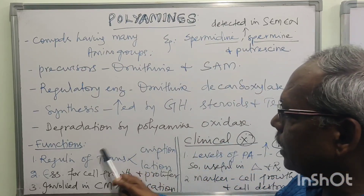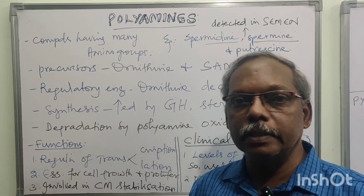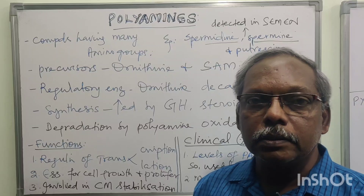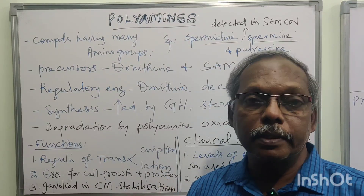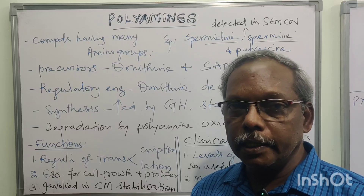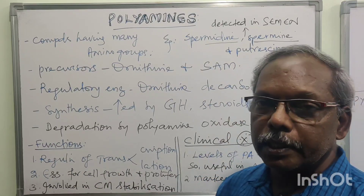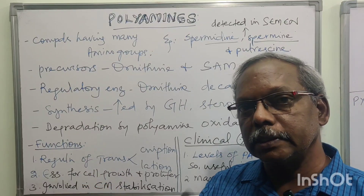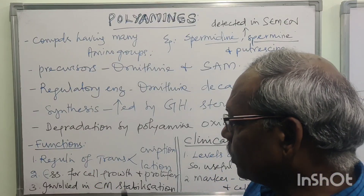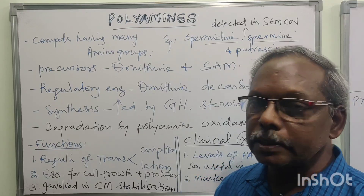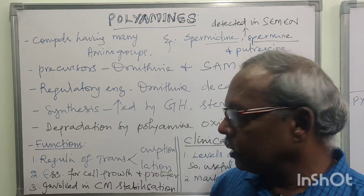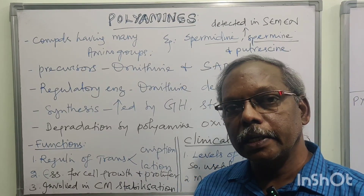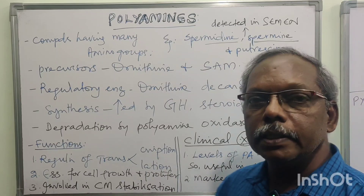The last two points are function and clinical importance. The very important function: polyamines are associated with nucleic acids — DNA and RNA. They are important for the regulation of transcription and translation, that is protein synthesis and nucleic acid synthesis. Second, polyamines are essential for cell growth and proliferation. Third, they are involved in stabilization of cellular organelles and cell membranes.